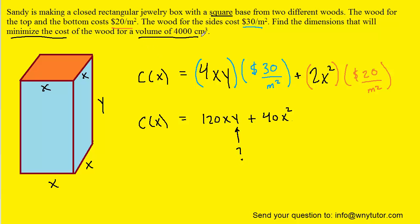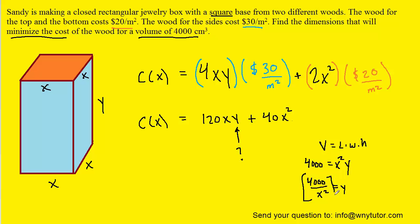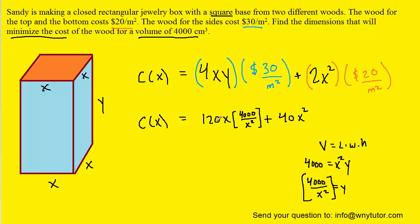The volume of any box is length times width times height. We were told the volume is 4000 centimeters cubed. The length and width are both X, so we have X times X, and the height is Y — giving us X squared times Y. Dividing both sides by X squared isolates Y as 4000 over X squared. We then substitute that expression for Y into our cost function and simplify: 120 times 4000, canceling a factor of X to get X to the first power in the denominator.